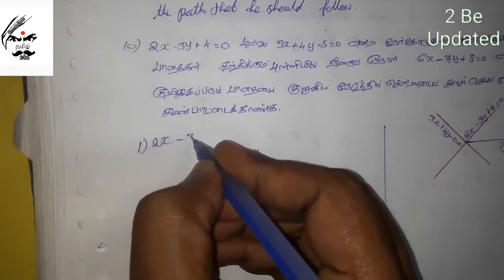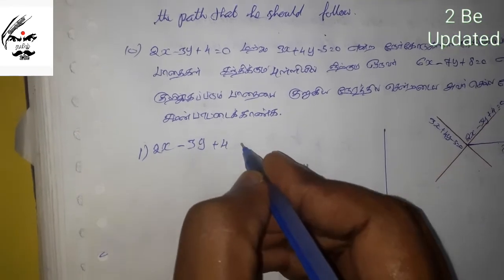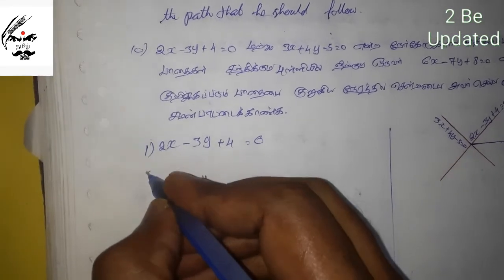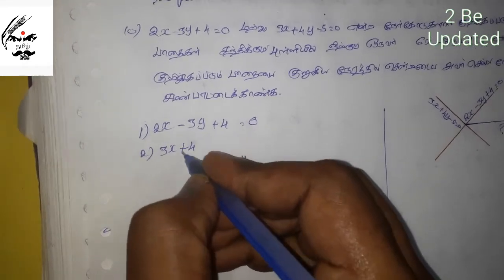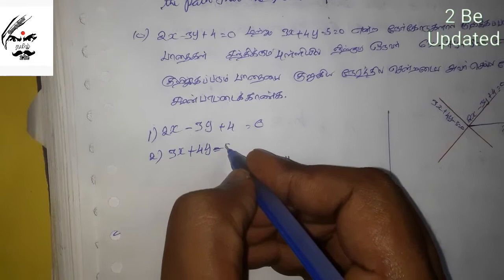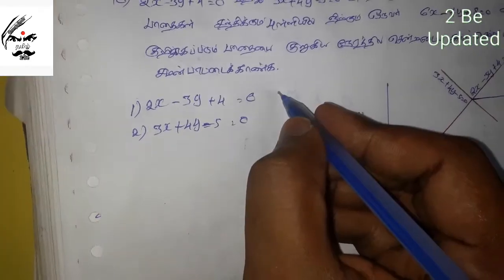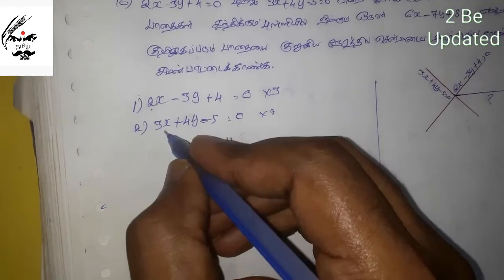2x minus 3y plus 4, and the second equation: 3x plus 4y minus 5 is equal to zero. So we have 2x plus 3x, which gives us 5x.